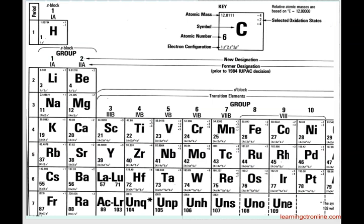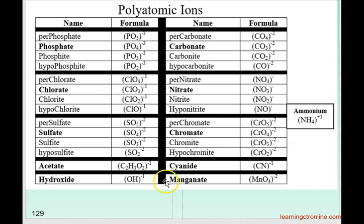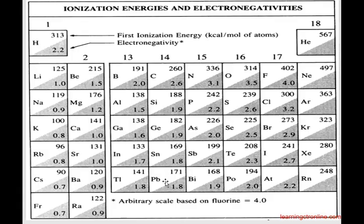Reference tables are also provided in the course so students do not need to memorize things like the periodic table. Here's a chart of polyatomic ions that they need to use throughout the course. Again, they do not need to memorize it.